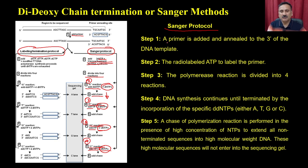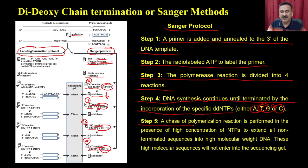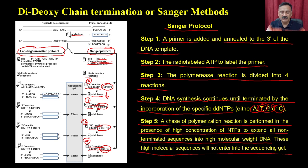In the Sanger protocol, you take the DNA sequence and add the primers. You can go with either the Sanger protocol or the labeling-plus-termination protocol. In the Sanger protocol you add dATPs and Klenow fragments, label the DNA, then divide into four reactions: reaction A adds ddATP plus the remaining three NTPs; reaction T adds ddTTP plus the remaining three; reaction G adds ddGTP plus the remaining three; and reaction C adds ddCTP plus the remaining three. In step 1, the primer is added and annealed to the 3' end of the DNA template. In step 2, radiolabeled ATP is added to label the primers. In step 3, the polymerase reaction is divided into four reactions. In step 4, DNA synthesis continues until terminated by incorporation of the specific ddNTP (A, T, G, or C). In step 5, a chase of the polymerase reaction is performed in the presence of high concentration of NTPs to extend all non-terminated sequences into high molecular weight DNA, which will not enter the sequencing gel.